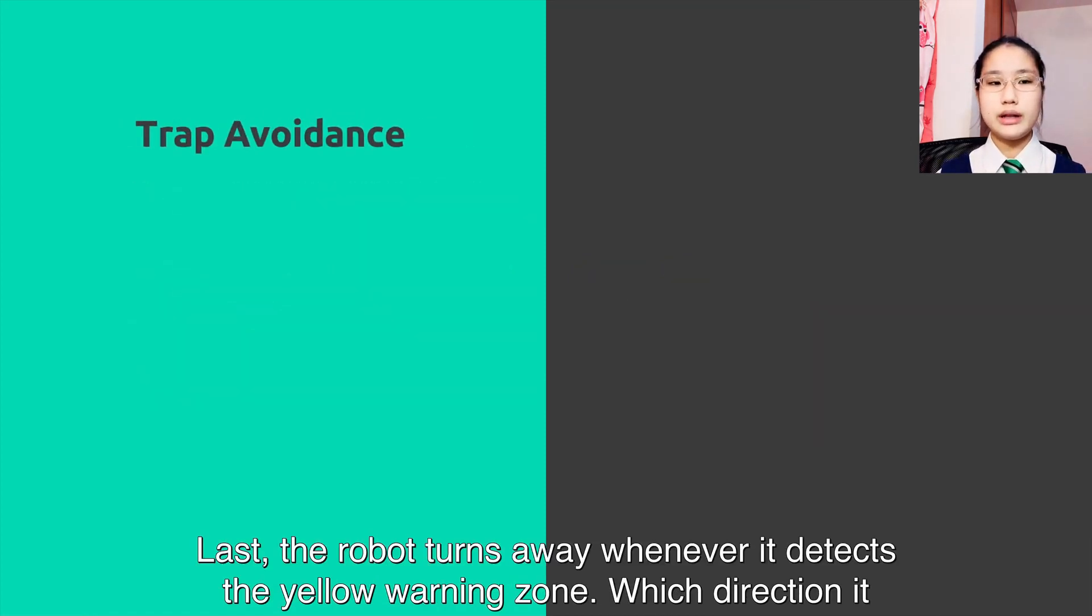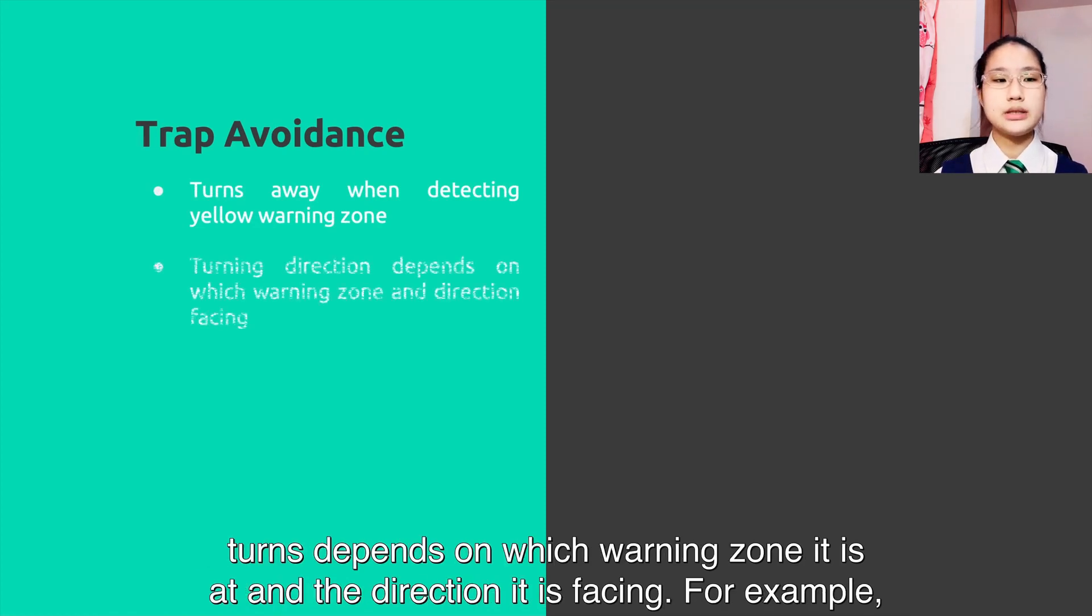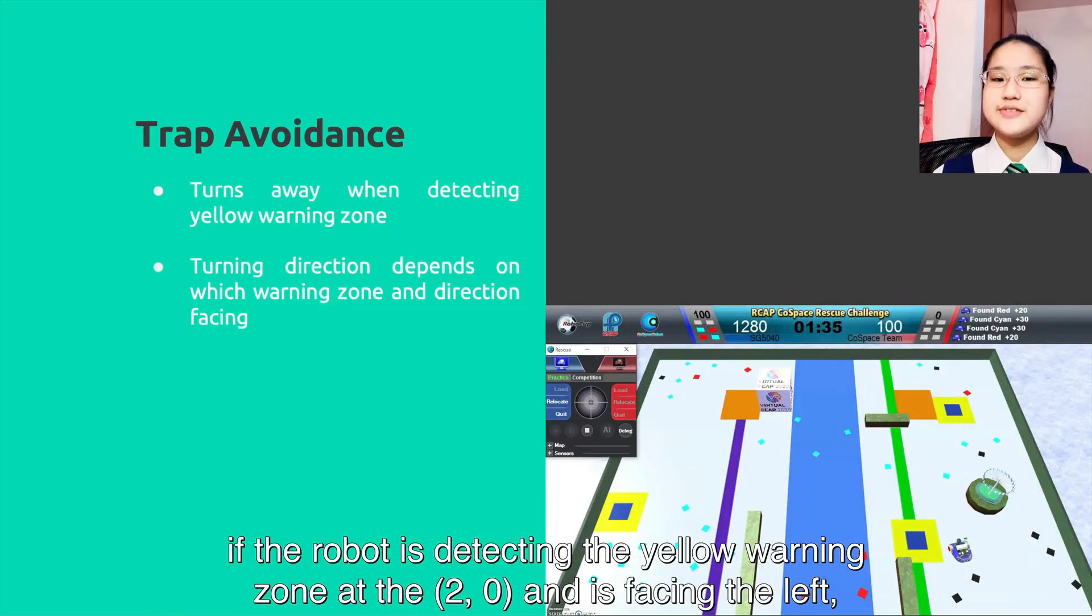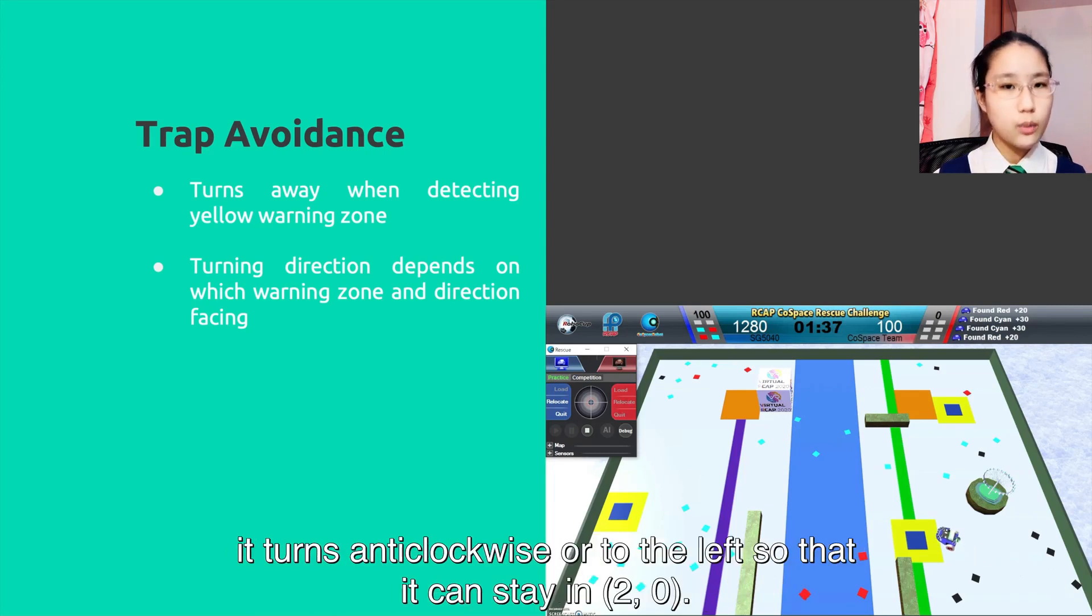Last, the robot turns away whenever it detects the yellow warning zone. Which direction it turns depends on which warning zone it is at and the direction it is facing. For example, if the robot is detecting the yellow warning zone at 0-0 and is facing left, it turns anti-clockwise or to the left so that it can stay in 0-0.